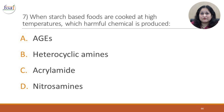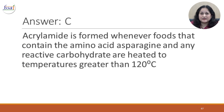Question 7: When starch-based foods are cooked at high temperatures, which harmful chemical is produced? The correct answer is acrylamide. Acrylamide is formed whenever foods that contain the amino acid asparagine and any reactive carbohydrate are heated to temperatures greater than 120°C. In fact, a box of French fries has very high amounts of acrylamide.